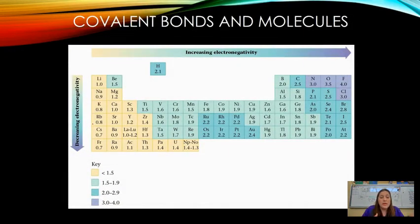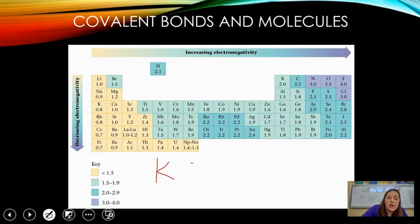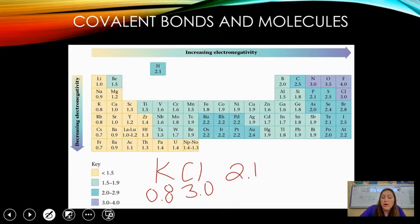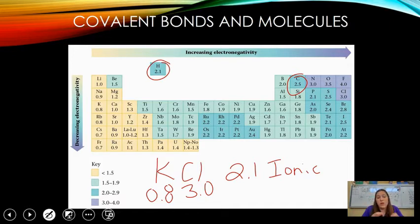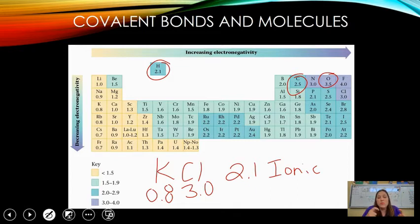For example, comparing potassium and chlorine: potassium has an electronegativity of 0.8 and chlorine has 3.0. The difference is 2.1 — that is definitely an ionic bond. If I compare carbon (2.5) and hydrogen (2.1), the difference is 0.4, which would be slightly polar covalent. For H2O — hydrogen versus oxygen — 3.5 minus 2.1 gives a difference of 1.4, making it a polar covalent bond.